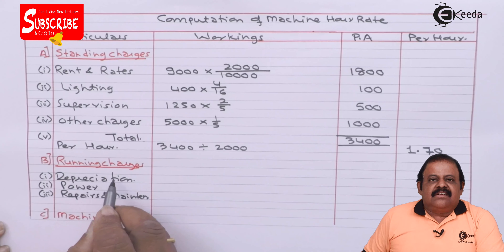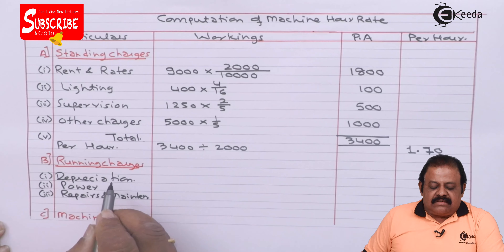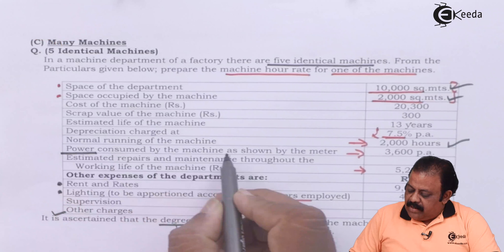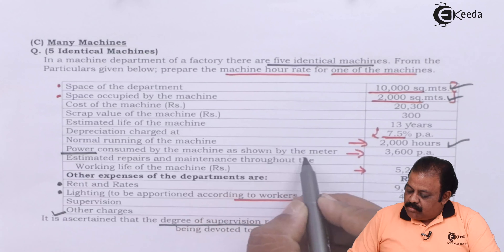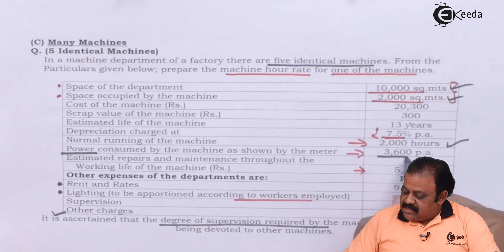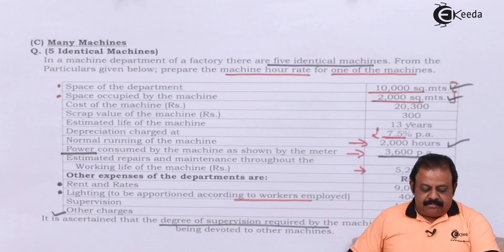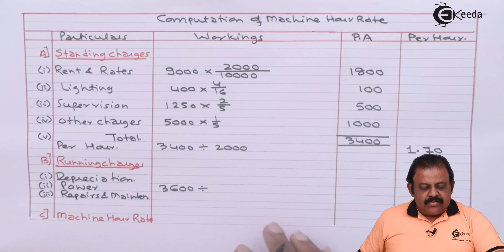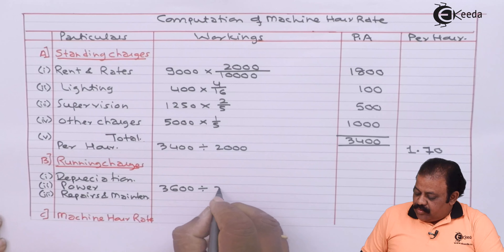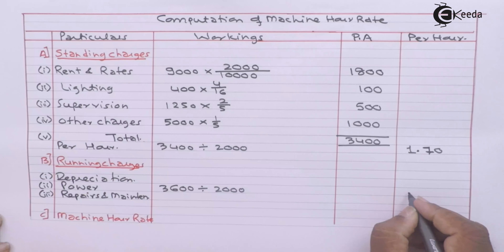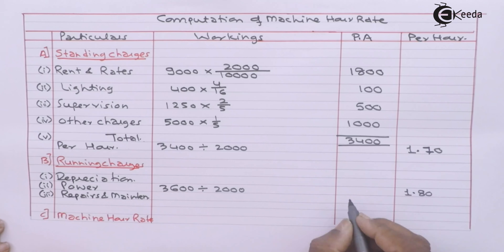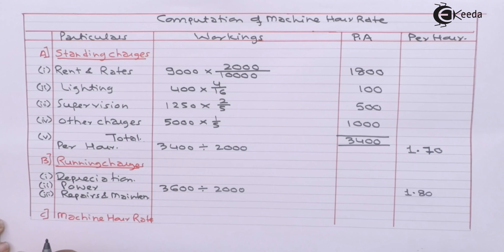Now let us consider running charges. Power consumed by the machine as shown by the meter is 3,600 per annum. So 3,600 divided by 2,000 hours gives Rs. 1.80 per hour.